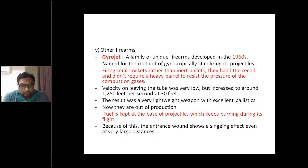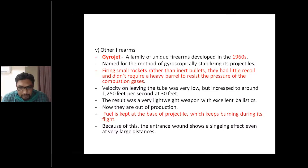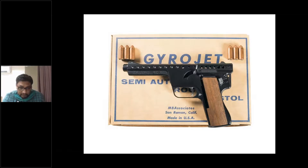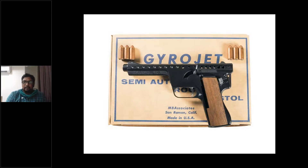Gyrojets are a unique type of firearm that fires small rockets rather than inert bullets. They have little recoil and do not require a heavy barrel. Velocity on leaving the tube was very low but increased to around 1,250 feet per second at 30 feet. They are now out of production. The fuel is kept at the base of the projectile and keeps burning during flight, so the entrance wound shows a singeing effect even at very large distances.